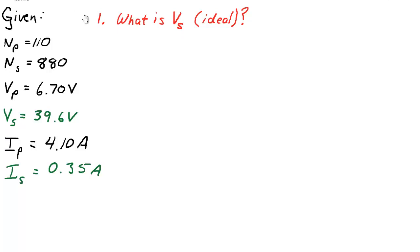So question one. What is the secondary voltage ideally? If there was no losses in this transformer, what should the secondary voltage be? Well, we know our equation. Our equation for ideal transformers is just that the ratio of the turns, NP over NS, is the same as the ratio of the voltages.